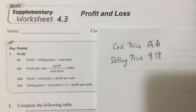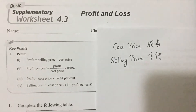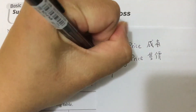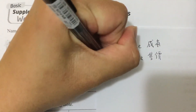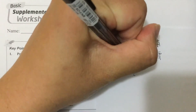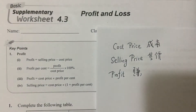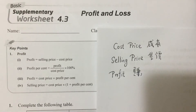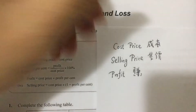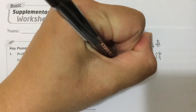So if you gain something from the trade, that is called profit — in Chinese this is 赚. And if you lose some money, you will have a loss — in Chinese that is 蚀.